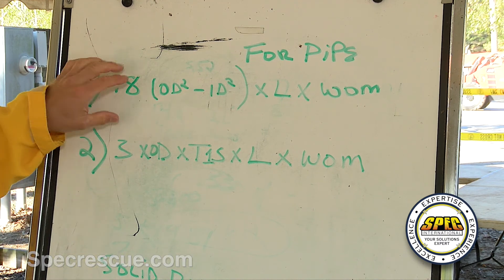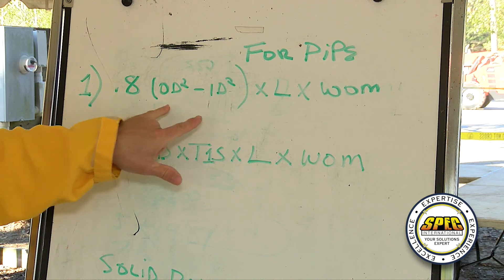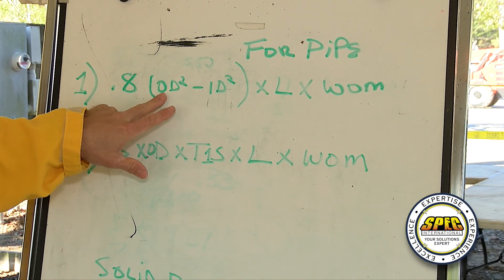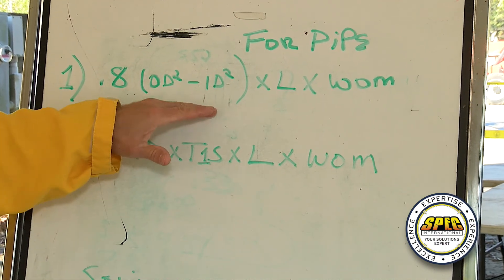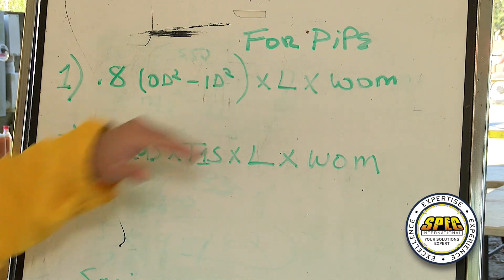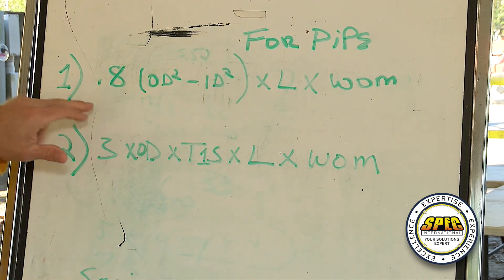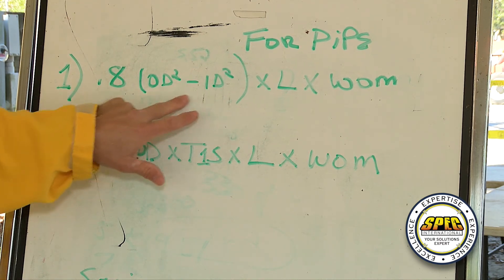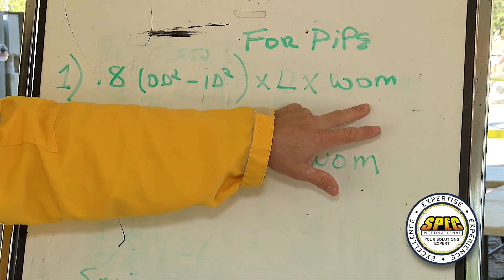The first formula involves some algebra. Understanding that we need to do the brackets first: outside diameter squared subtracted by the inside diameter squared. Once we have that figure, we calculate the weight of our piece of pipe: 0.8 times this formula, times the length, times the weight of material.